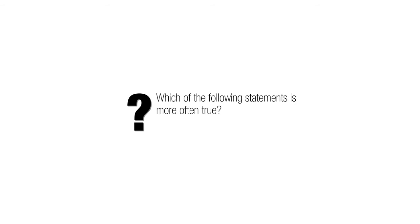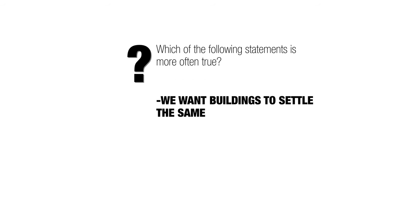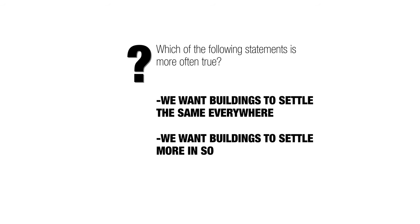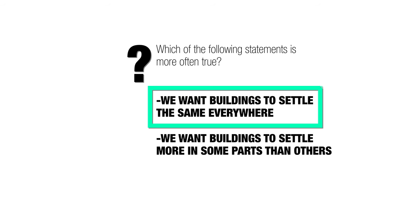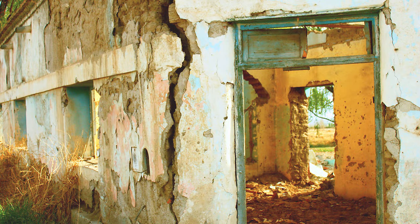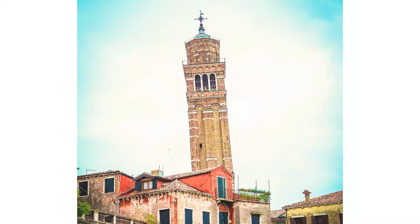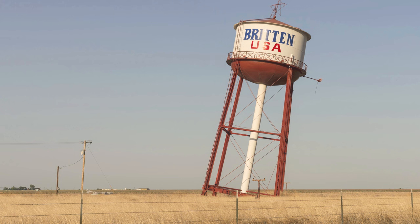Which of the following statements is more often true? Statement one: we want buildings to settle the same everywhere. Statement two: we want buildings to settle more in some parts than others depending on weight, number of floors, structural system, and soil type. Of course, we want buildings to settle the same everywhere — that's uniform settlement. Differential settling means walls crack, doors don't open, floors get sloped, and windows crack. Settling will happen; we just prefer it's not too much and that it's roughly uniform. On rock, settling is negligible, but on other soil types it can be more significant.